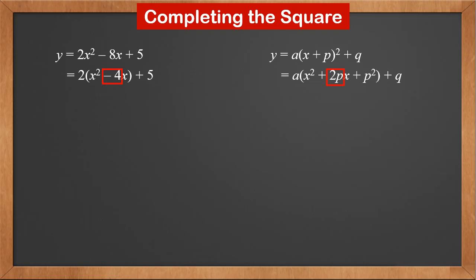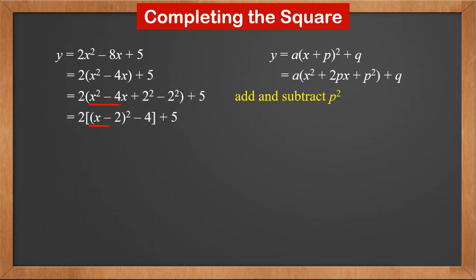In order to make a complete square, we need a term of p². Since it is not there, we add and subtract it inside the brackets — this doesn't change the value. So we add and subtract 2² inside the brackets. The sign of p doesn't matter since (-2)² = 2². Now x² - 4x + 2² forms a complete square, so inside the brackets it becomes (x - 2)² - 4. Multiplying 2 into the brackets gives 2(x - 2)² - 8. Adding the third term 5, we finally get 2(x - 2)² - 3.